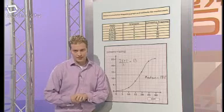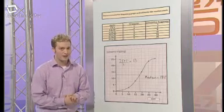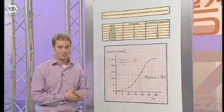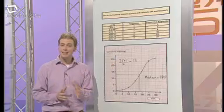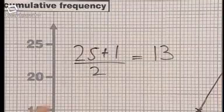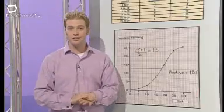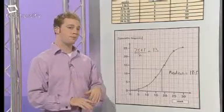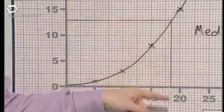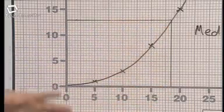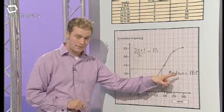I plotted the same graph and to find the median I also started by taking the highest value of the cumulative frequency, which is 25. I added 1, divided by 2 to give me 13. To find the 13th value, I read across from 13 on the vertical axis to the curve and down to the horizontal axis, giving me a median mark of 18.5.